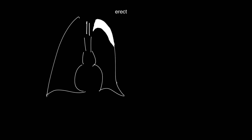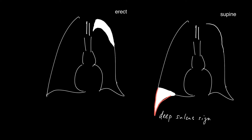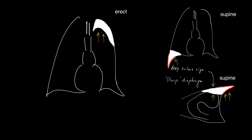So, in the erect position, gas rises and you tend to get the pneumothorax in the apex. In a supine position, the pneumothorax tends to collect at the base, giving the so-called deep sulcus sign. That's where the costo-phrenic sulcus on the affected side is lower than the normal side. So, in the case of a pneumothorax in a supine patient, the gas in the pleural space collects anteriorly at the base, causing this deep costo-phrenic sulcus.